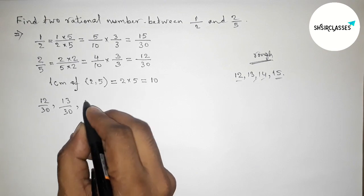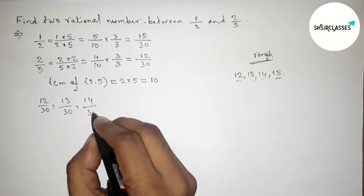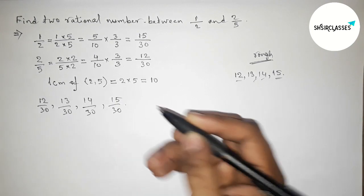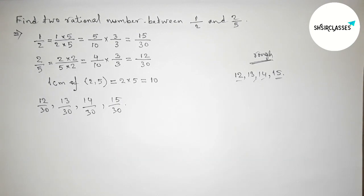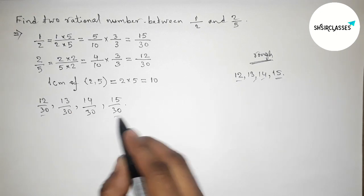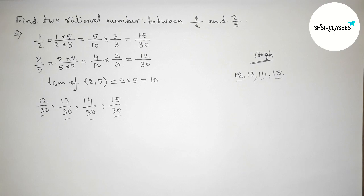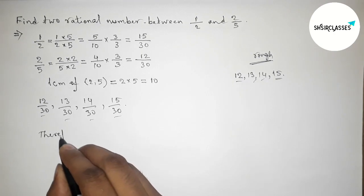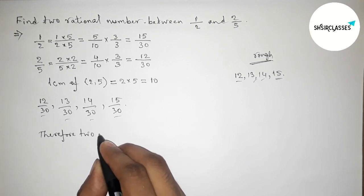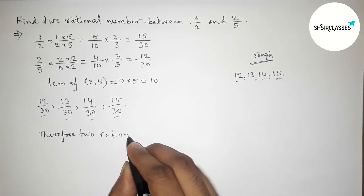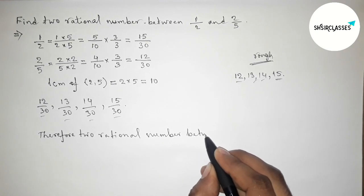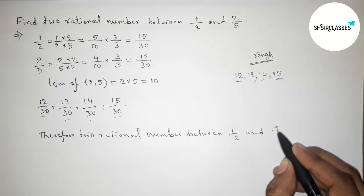Now first write down here all the rational numbers: 12 by 30, then 13 by 30, 14 by 30, then last one 15 by 30. So between 12 by 30 to 15 by 30, we can get here 2 required rational numbers.